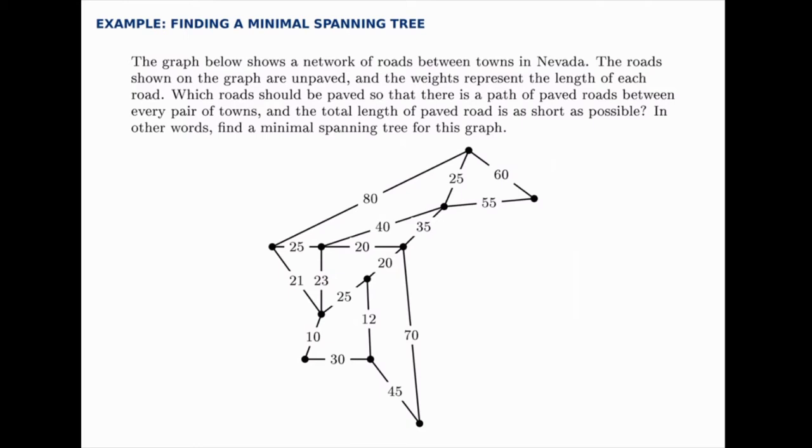Which roads should be paved so that there is a path of paved roads between every pair of towns and the total length of paved road is as short as possible? In other words, we're looking for a minimal spanning tree, so that they're all connected by paved roads. You could find a paved path from any one city to another and we want to use the minimal total length.